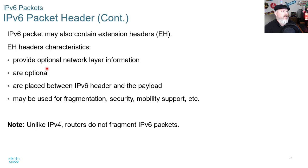The V6 packet may contain extension headers, which provide optional network layer information. They are placed between the V6 header and the payload and may be used for fragmentation, security, mobility, and support. Unlike V4, routers do not fragment V6 packets.